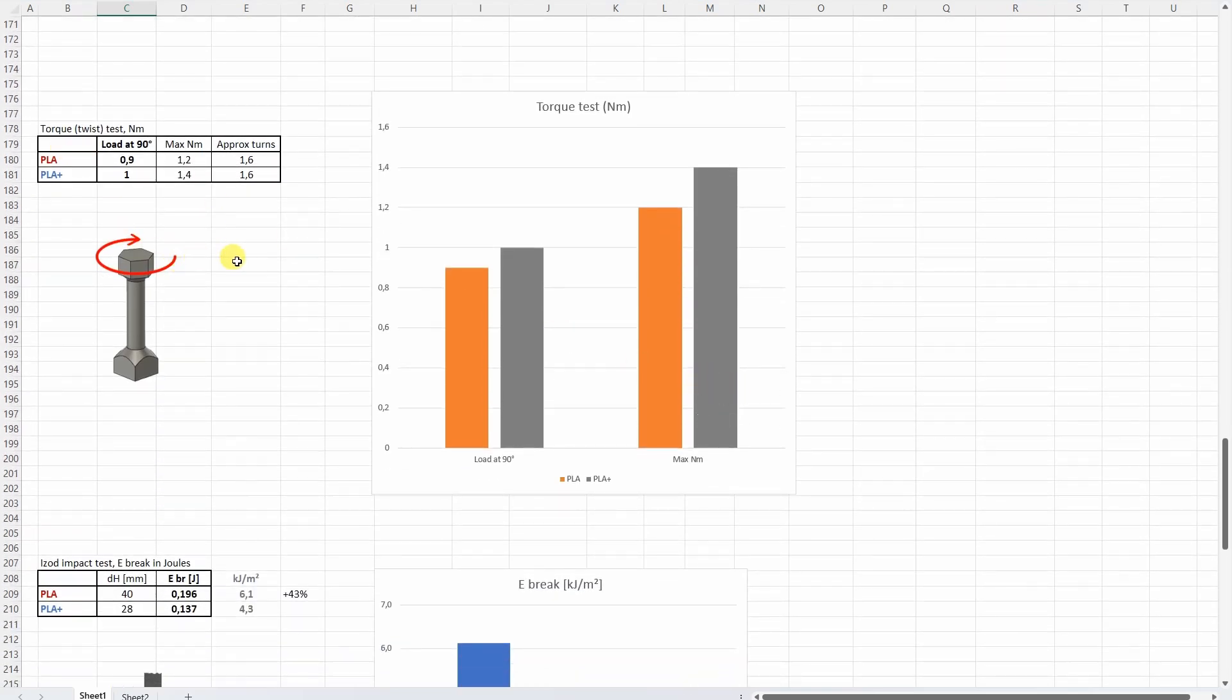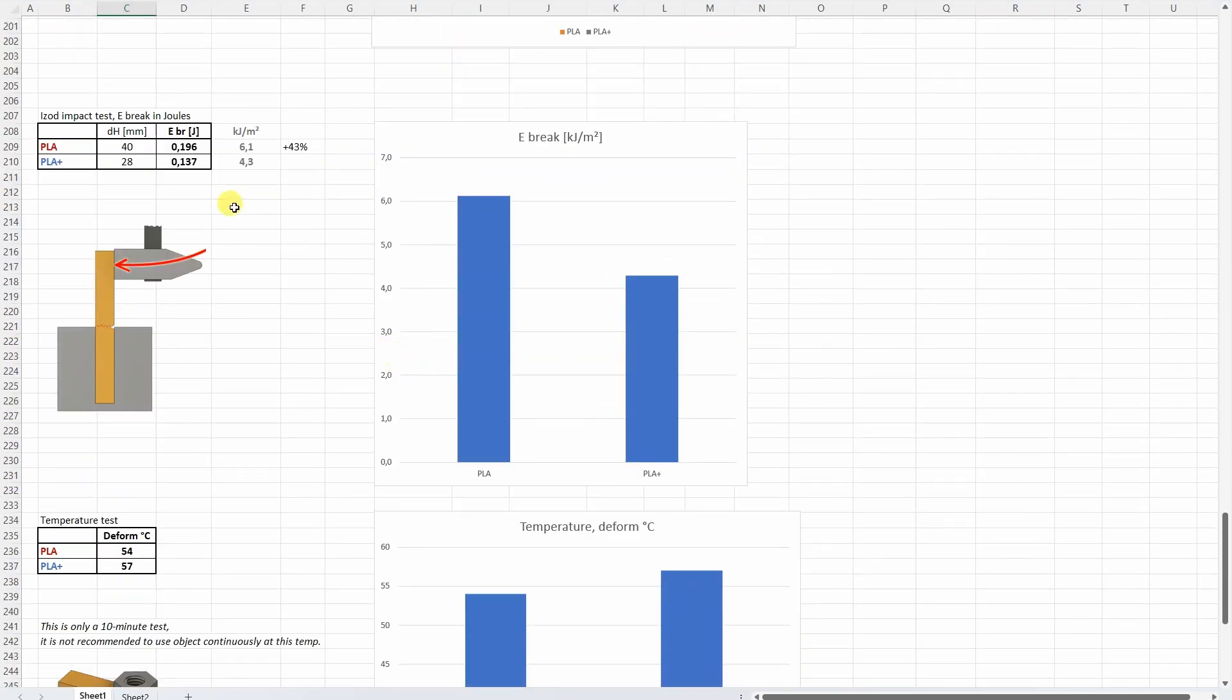The torque test. Well these are very similar values. More important is of course this load at 90 degree angle. Well PLA Plus a little bit stronger in this test. IZOD impact test and here I think this was the only test where the PLA was significantly better than the PLA Plus. So less brittle material compared to the PLA Plus.